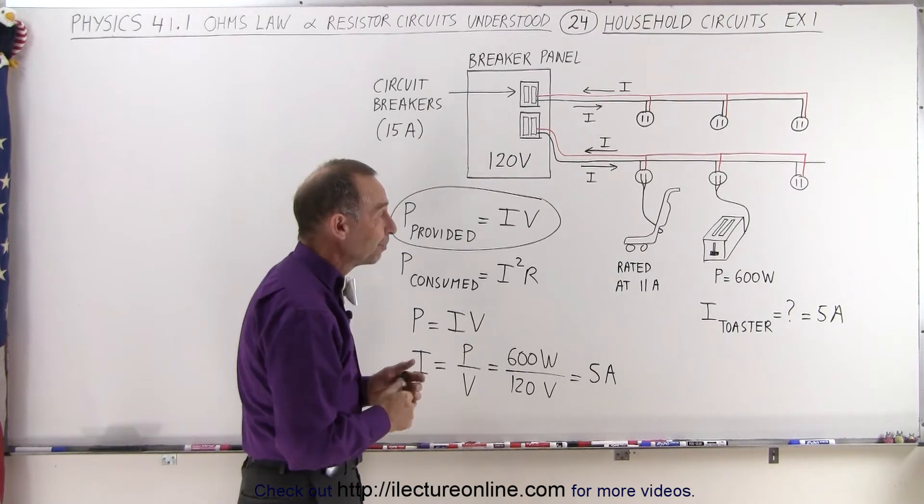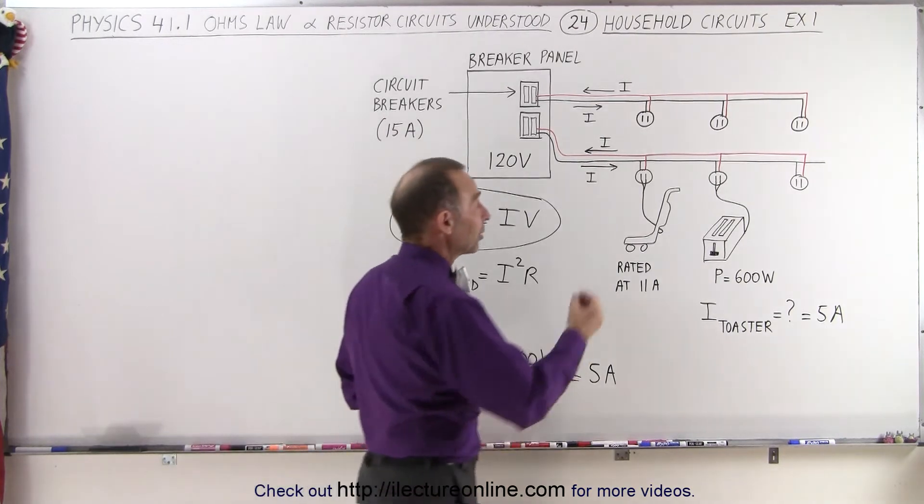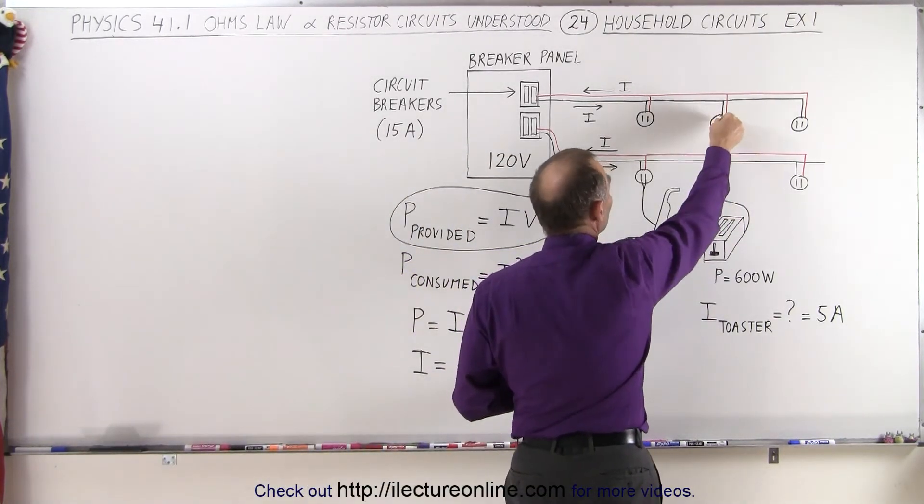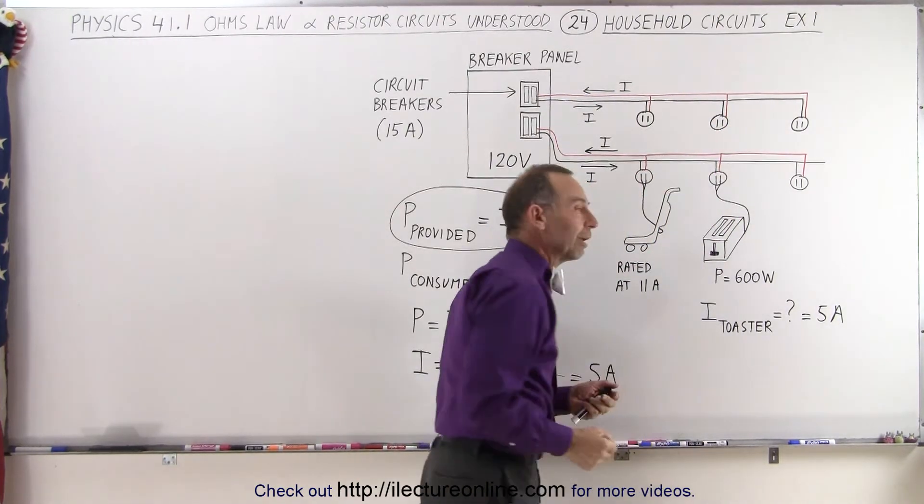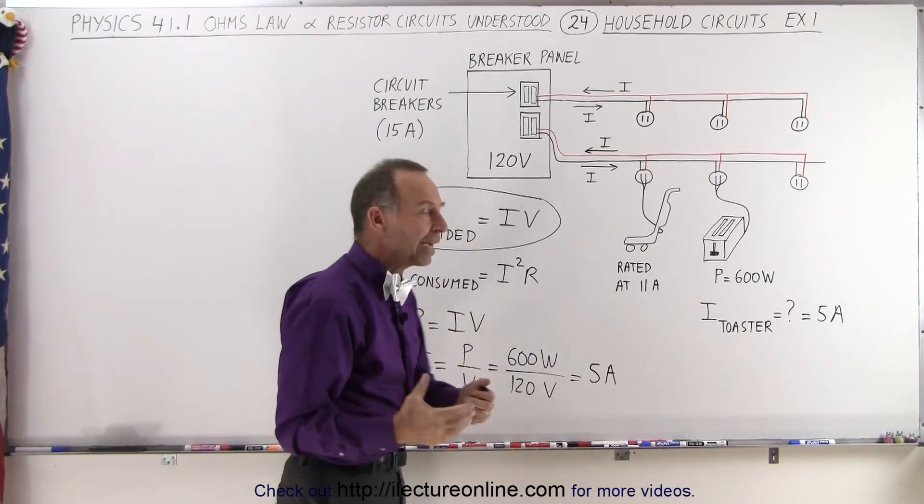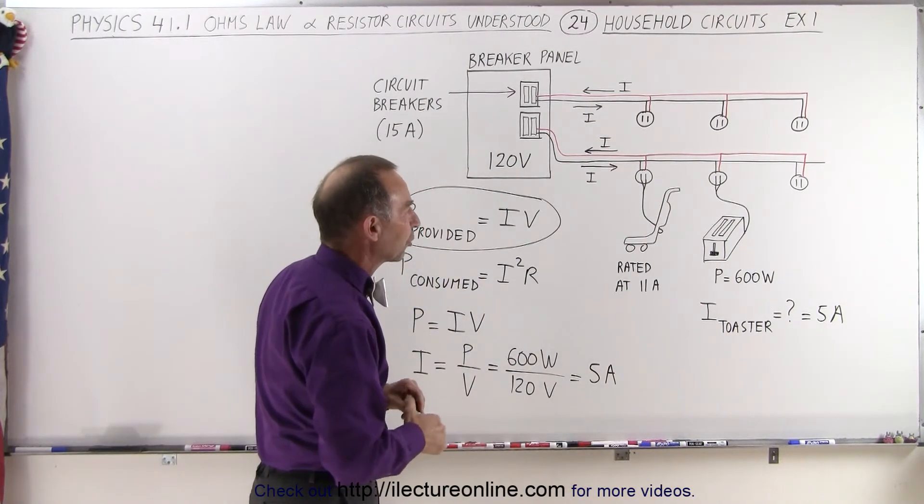So what you would need to do is take your toaster and hook it up to another circuit, so they only draw 5 amps of current through this circuit and 11 amps of current through that circuit. That's how they protect us from overloading the circuits.